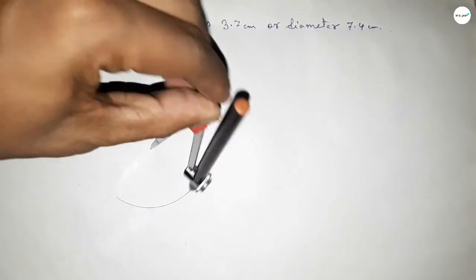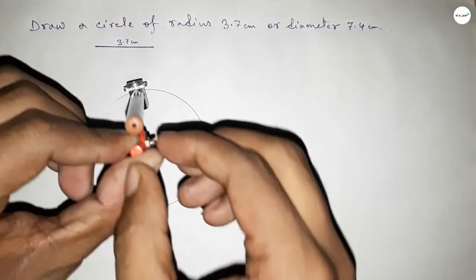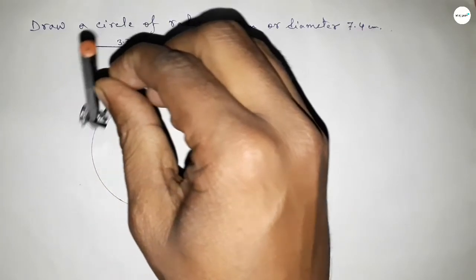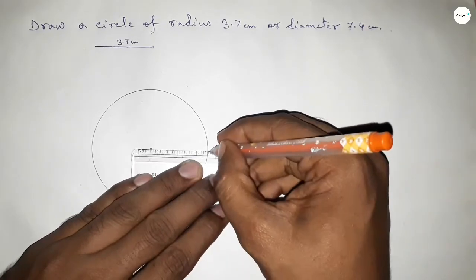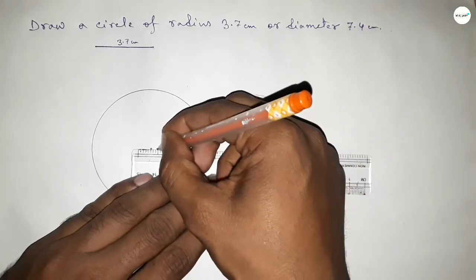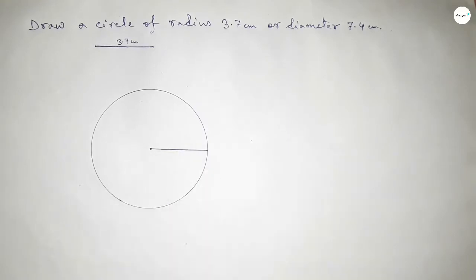Now drawing an arc, which represents a circle with radius 3.7 centimeter. Now joining this one which is the radius of the circle.